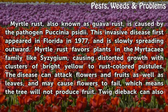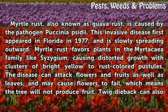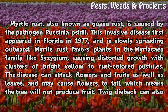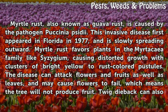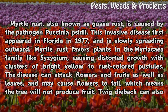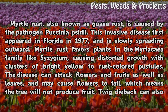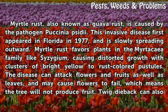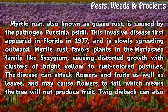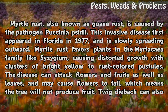Myrtle rust, also known as guava rust, is caused by the pathogen Paxenia citii. This invasive disease first appeared in Florida in 1977 and is slowly spreading outward. Myrtle rust favors plants in the Myrtaceae family like Syzygium, causing distorted growth with clusters of bright yellow to rust-colored pustules. The disease can attack flowers and fruits as well as leaves.